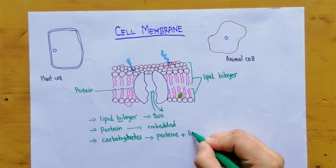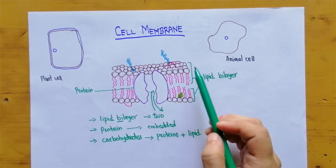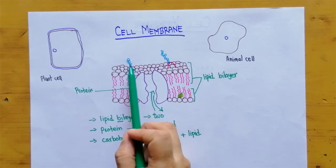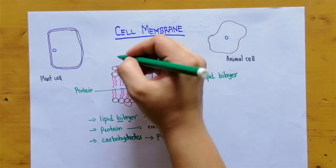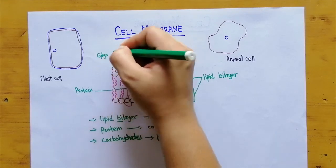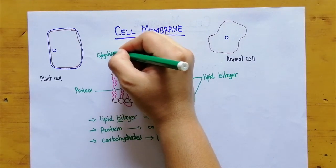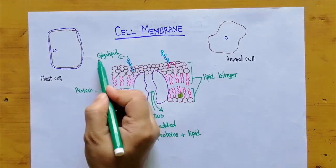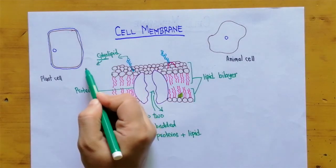In this case here this blue part which is attached to the lipid it is known as glycolipid. This glyco word means carbohydrates.